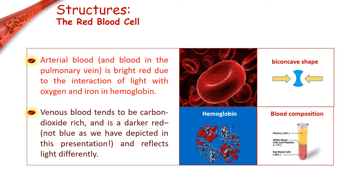Another key use of the red blood cell is to help determine human blood type. To determine human blood type, your immune system looks for the presence or absence of antigens, which rest on top of the red blood cells. Your bone marrow inside your bone is where the red blood cells are produced.